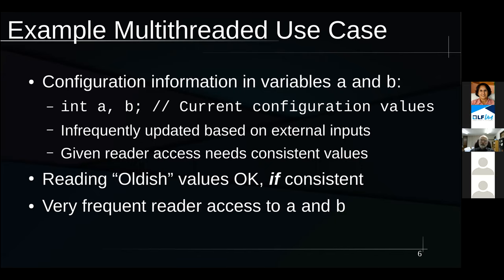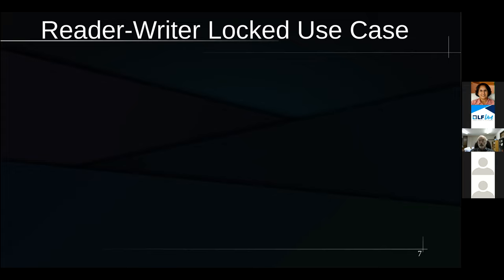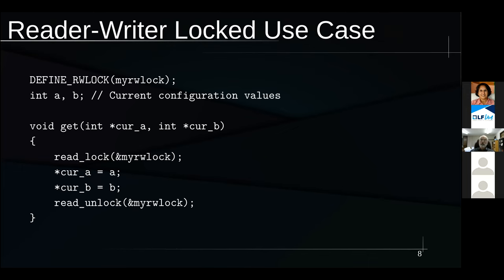Think of this as a problem you're trying to solve. One approach is to use reader-writer locking — after all, we're mostly reading and writing occasionally, that's what it's designed for. Using Linux kernel syntax, you define a reader-writer lock named myrwlock, and we have a couple of global integers, A and B, which are the current configuration values.